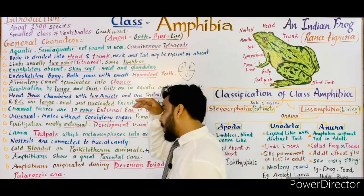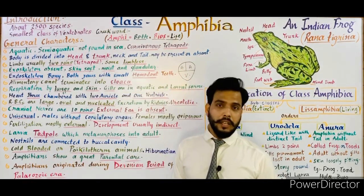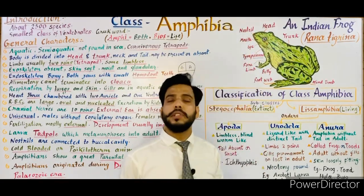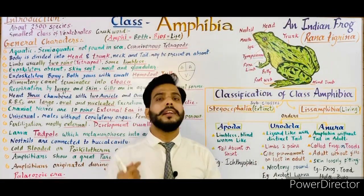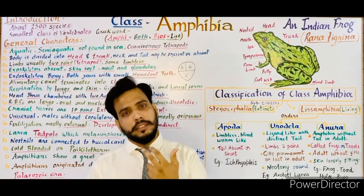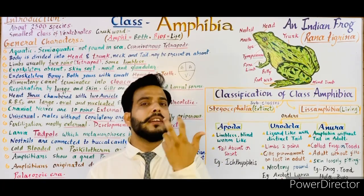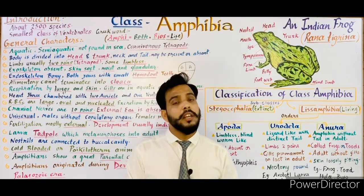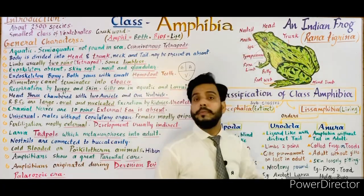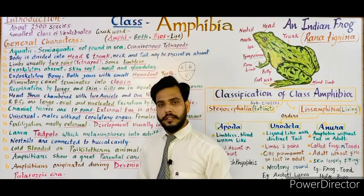Nostrils are connected to the buccal cavity. In most animals the respiratory and digestive tracts are separate, but in amphibians the nostrils are connected with the buccal cavity. Amphibians are also cold-blooded, meaning they are unable to regulate their body temperature according to the environment.